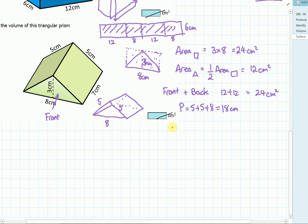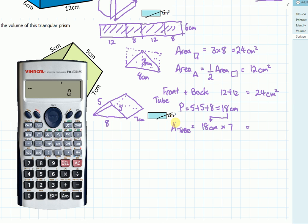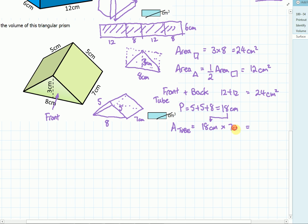To get the area of the tube, we've got this eighteen centimeters, the perimeter. And we multiply it by its length going back, which is seven centimeters. Grab your calculator. And we do eighteen times seven, which is a hundred and twenty-six centimeters squared.